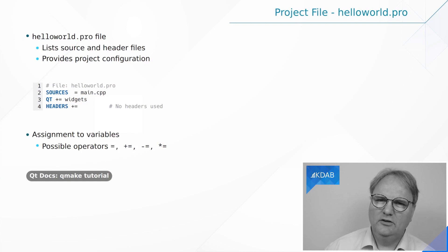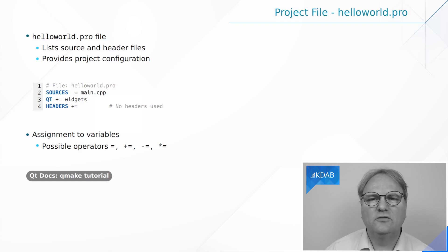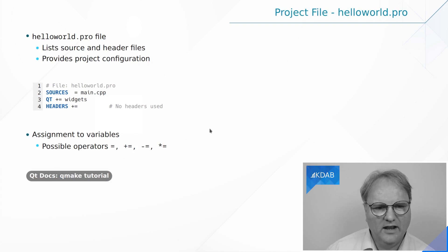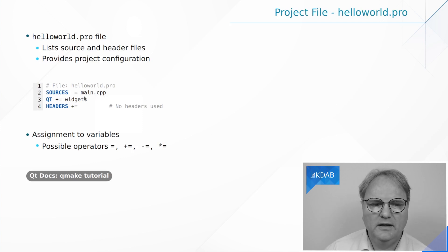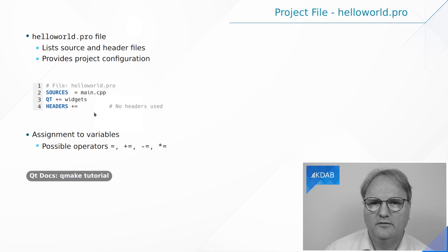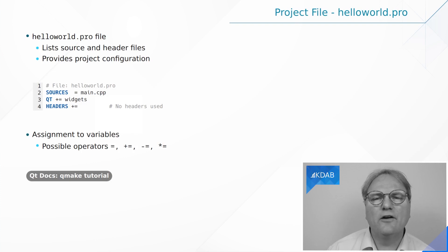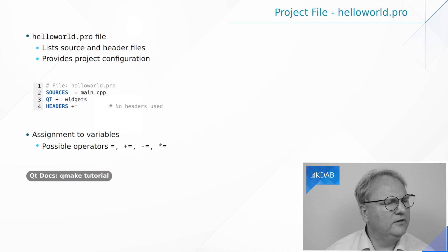In QMake, you specify which files you have and how these files should make up a project. What you see here is the HelloWorld.pro file — a complete QMake file for this project. It says my sources is main.cpp, I want to use widgets, and I don't even have any header files. When you run QMake, what you get out is a Makefile — it's a native build file, not a ninja file; that's only with CMake.